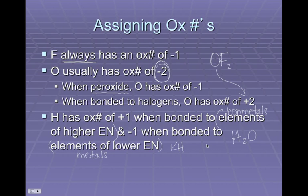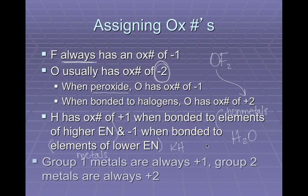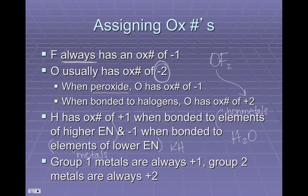Please don't get tripped up by the term oxidation number — it really is just a fancy term for charge. Group 1 metals, the alkali metals, will always have a +1 charge when in a compound. The group 2 metals, the alkaline earth metals, will always be +2 when in a compound. Remember, oxidation numbers — it's all about compounds.